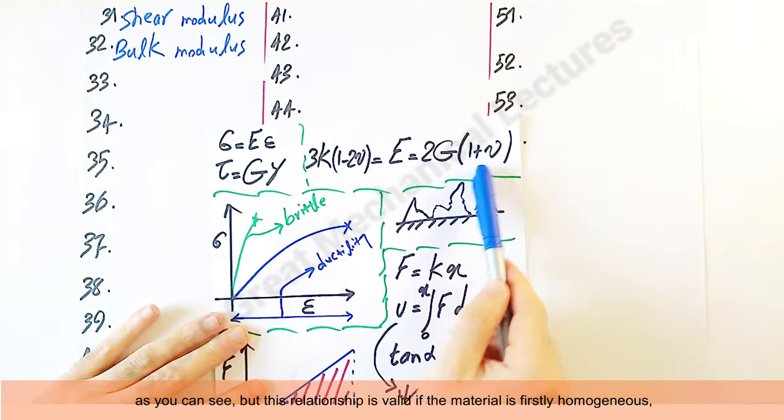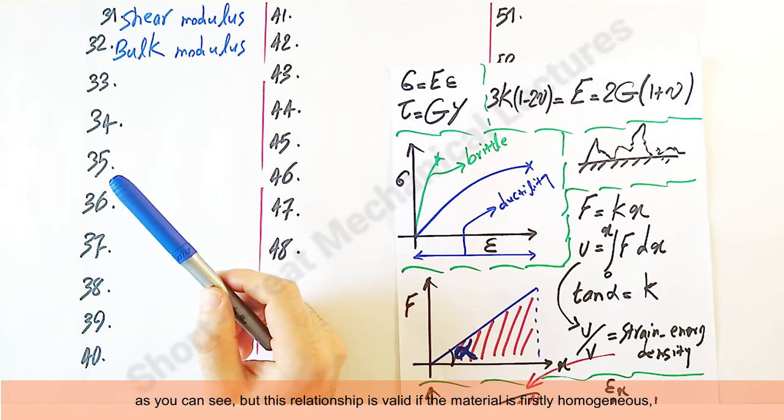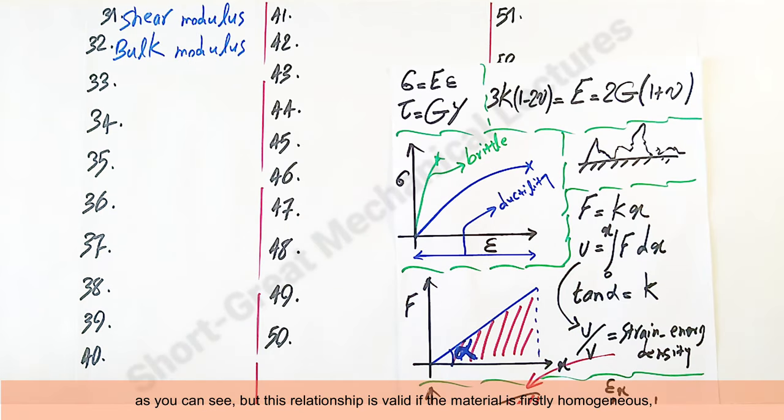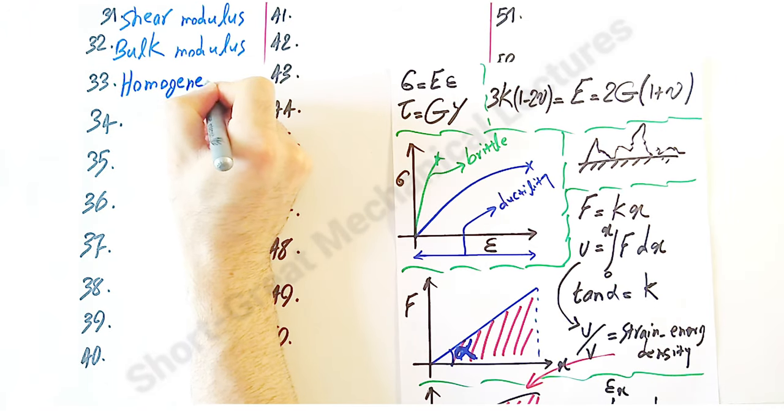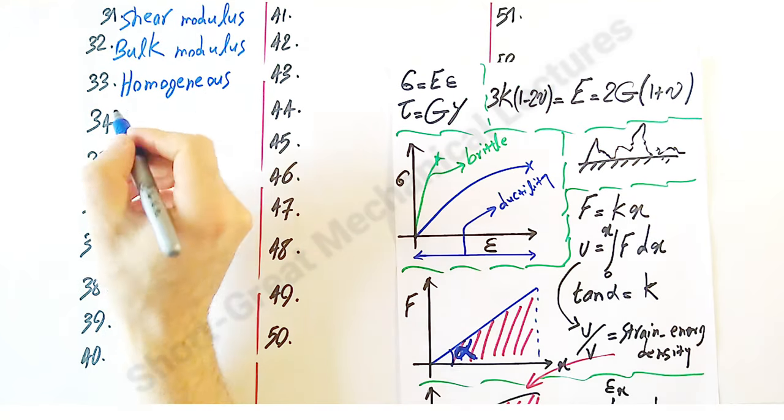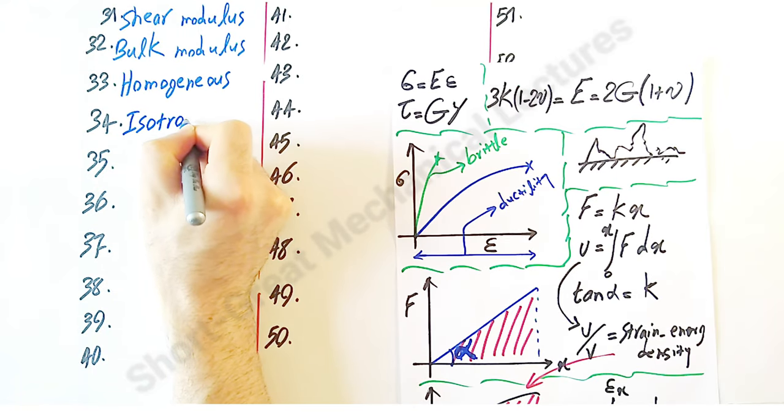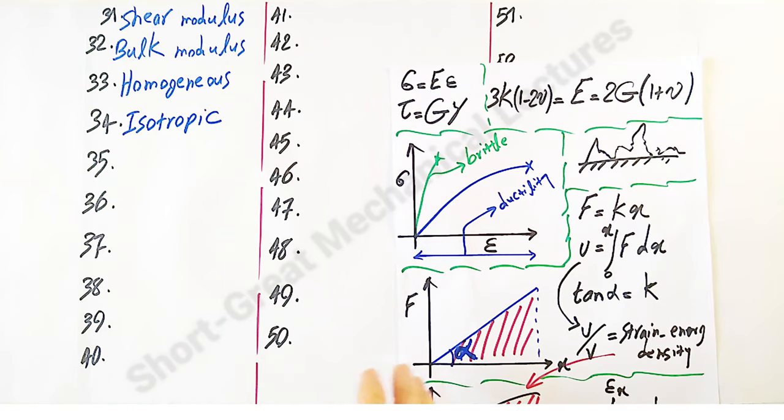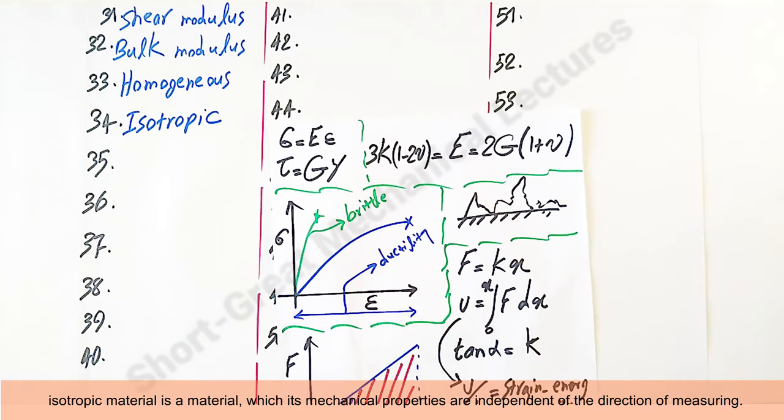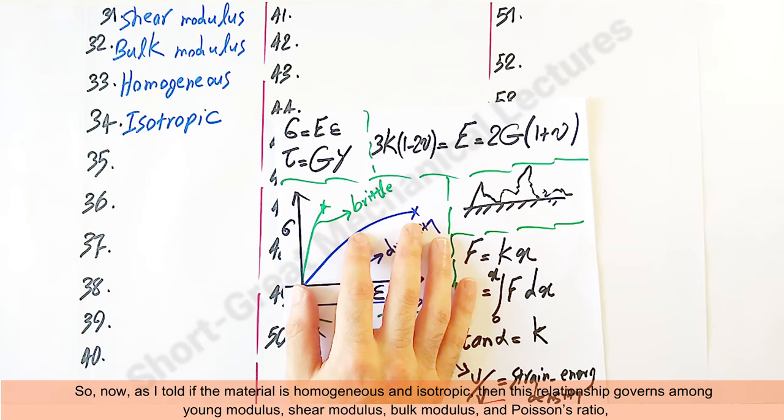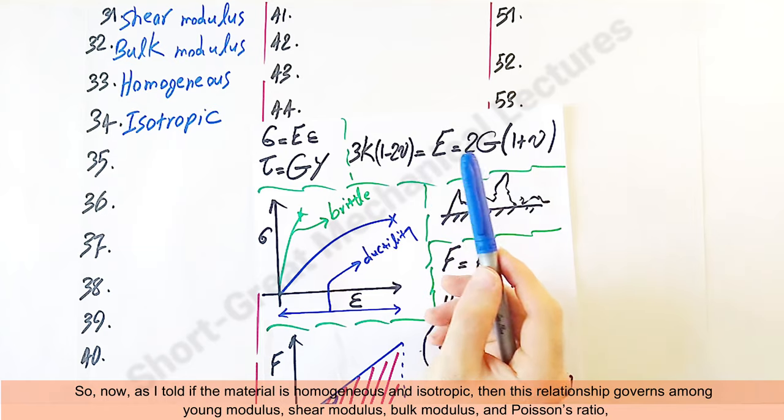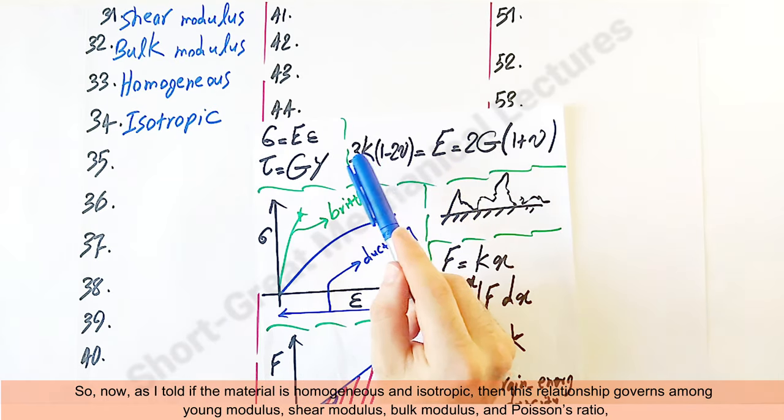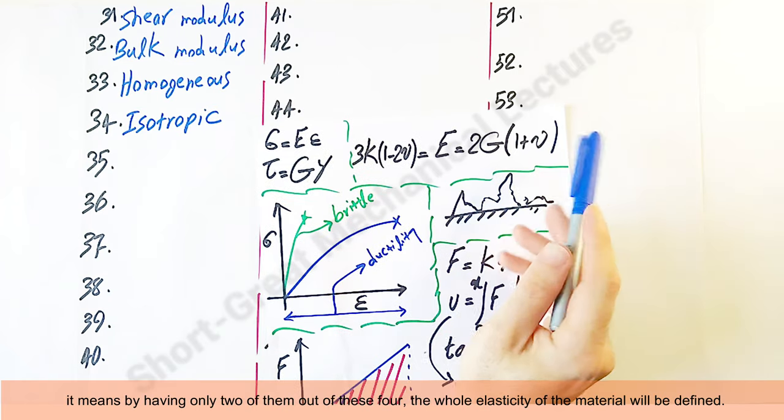But this relationship is valid if the material is firstly homogeneous, so homogeneous, and secondly isotropic. Isotropic material is a material whose mechanical properties are independent of the direction of measuring.